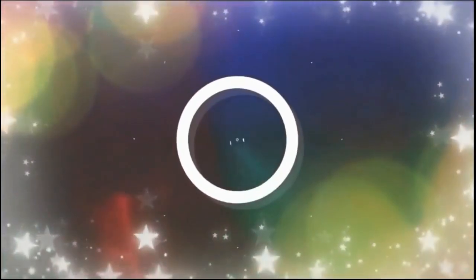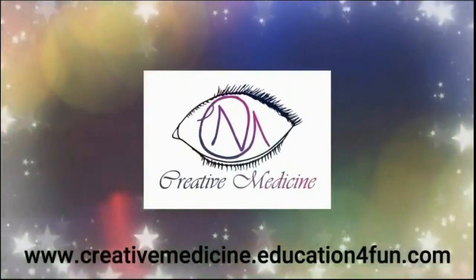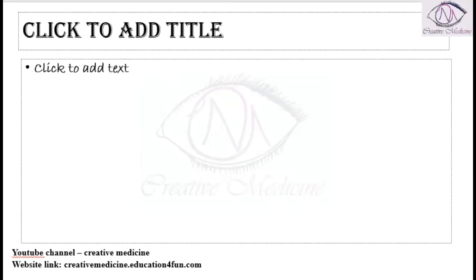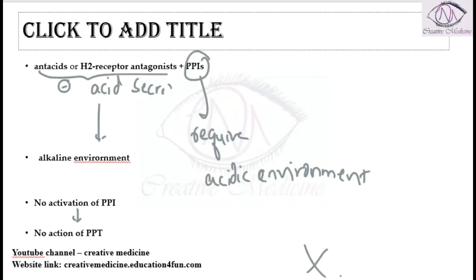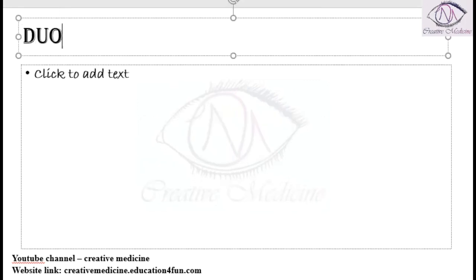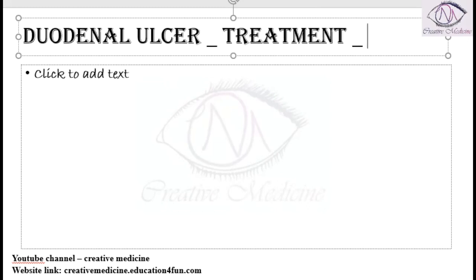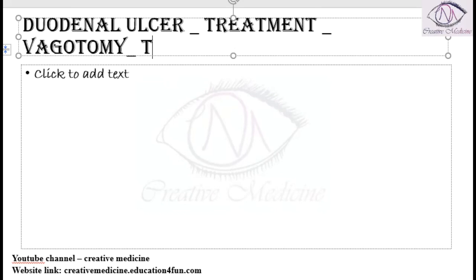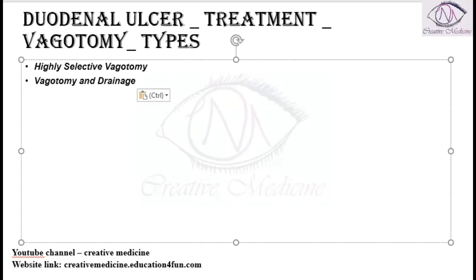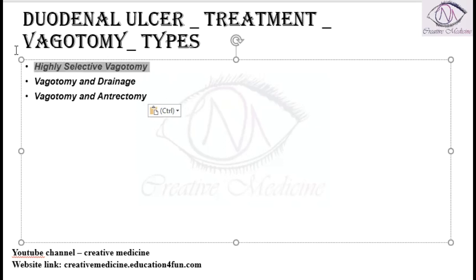Welcome to Creative Medicine. In this lecture, we will learn about the types of vagotomy. In duodenal ulcer treatment, we perform vagotomy. There are three types: highly selective vagotomy, vagotomy and drainage, and vagotomy and antrectomy.